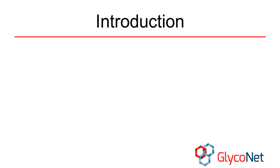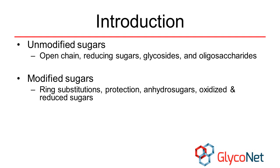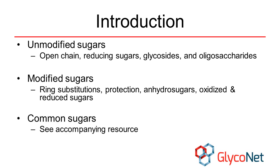This module is organized into two general sections. We will begin with unmodified sugars containing only carbon, hydrogen, and oxygen, and discuss how to name open chain and cyclic sugars before moving into glycosides and oligosaccharides. We will then go on to discuss sugars modified with substitutions and protecting groups, as well as anhydrous sugars and sugars that have been oxidized or reduced. Note that this video is accompanied by a reference document containing the common names of some of the most frequently encountered sugars. Please feel free to look at this document as we progress through the presentation.